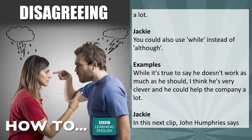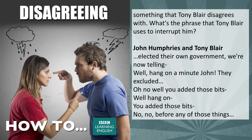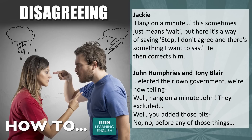In this next clip, John Humphreys says something that Tony Blair disagrees with. What's the phrase Tony Blair uses to interrupt him? 'Hang on a minute.' This sometimes just means 'wait,' but here it's a way of saying 'stop — I don't agree and there's something I want to say.' He then corrects him. 'He's elected their own government.' 'We're now telling the Iranians.' 'Well, hang on, John, they excluded...' 'Well, you added those bits.' 'No, no, no, before any of those things.'